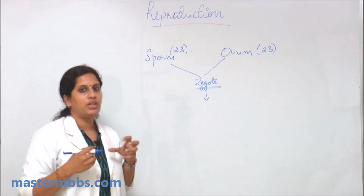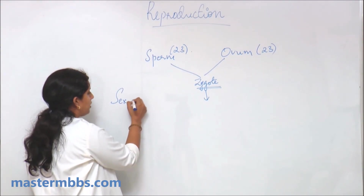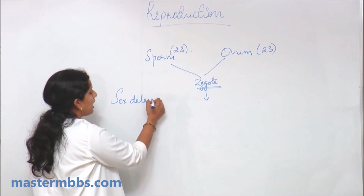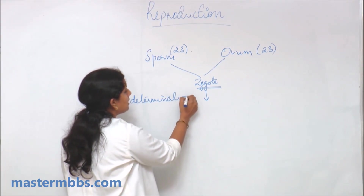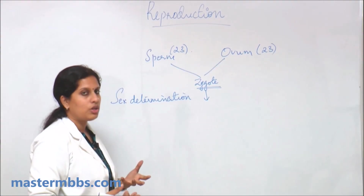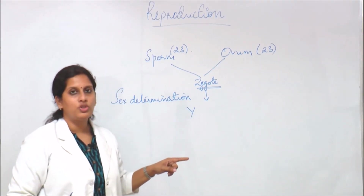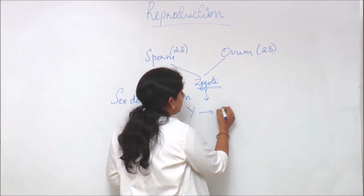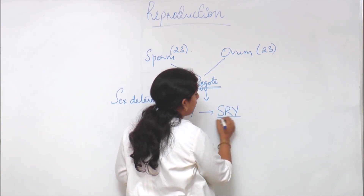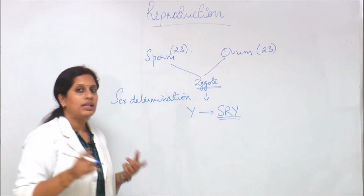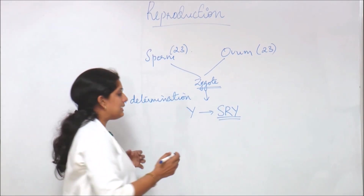Sex determination is based on the presence of the sex chromosome. If there is a Y chromosome and a particular SRY gene — the sex-determining region in the Y chromosome — then the gonad that is developing will be a testis.